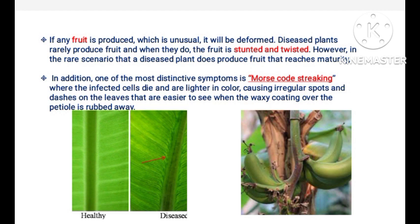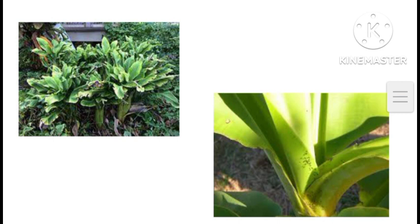In the rare scenario that a diseased plant does produce fruit that reaches maturity, the most distinctive symptom is Morse code streaking, where infected cells die and are lighter in color, causing irregular spots and dashes on the leaves. These are easier to see when the waxy coating over the petioles is rubbed. In this figure you can see the bunchy top appearance of the tree.